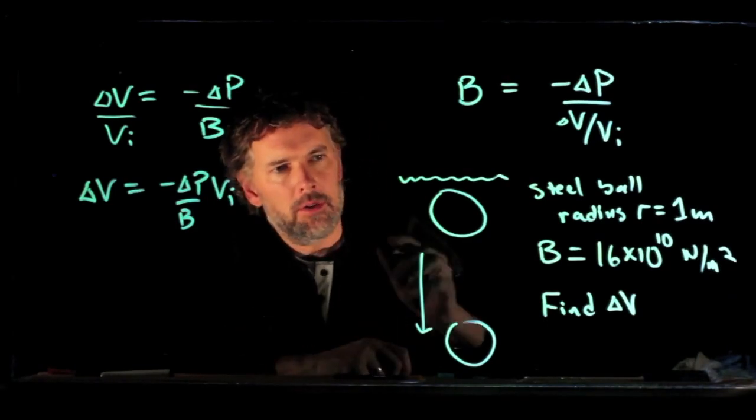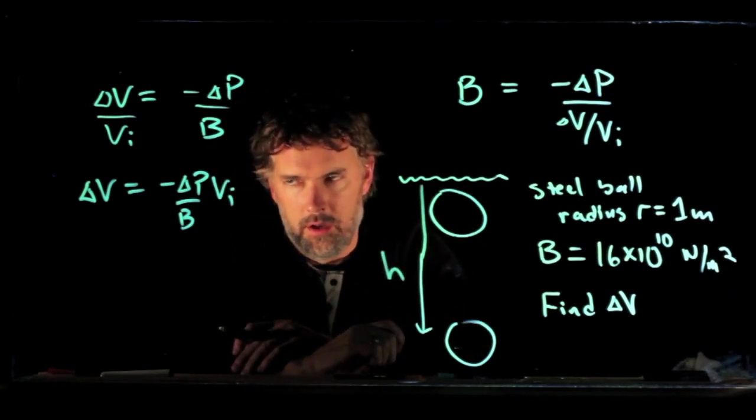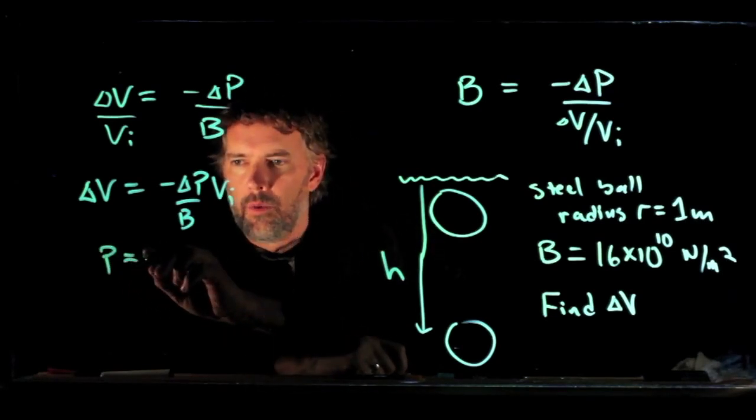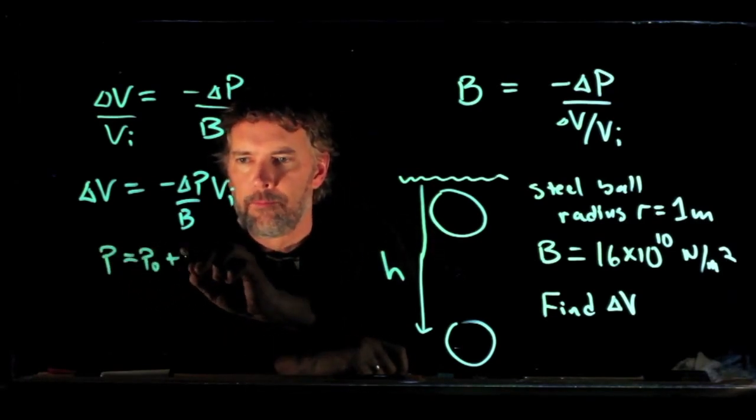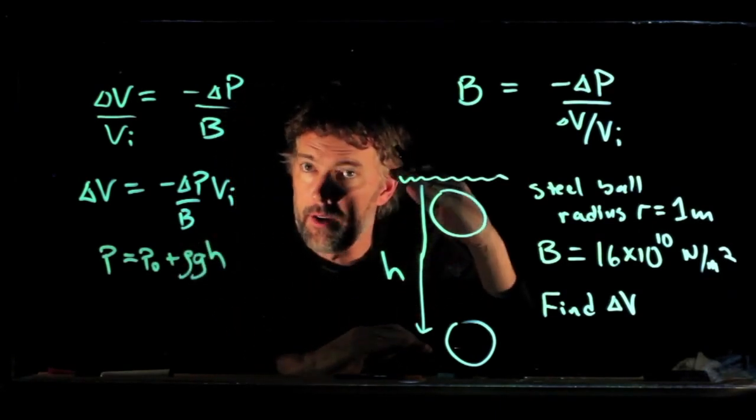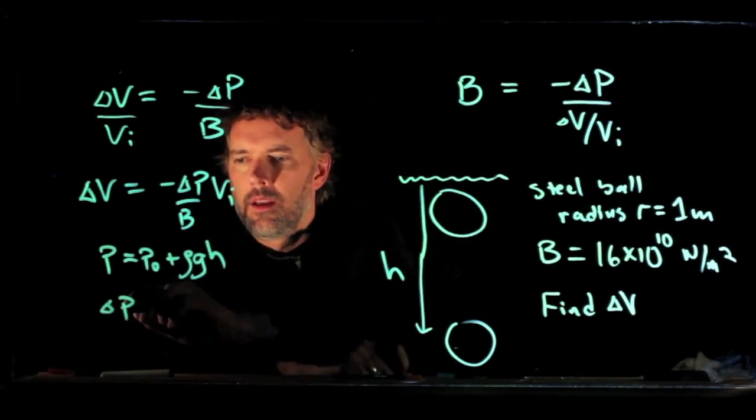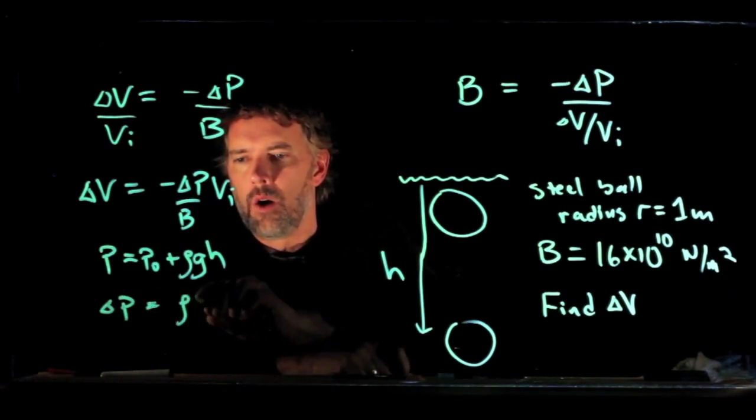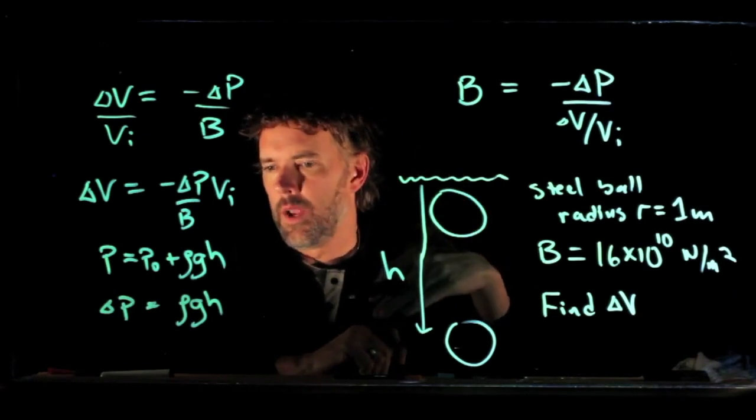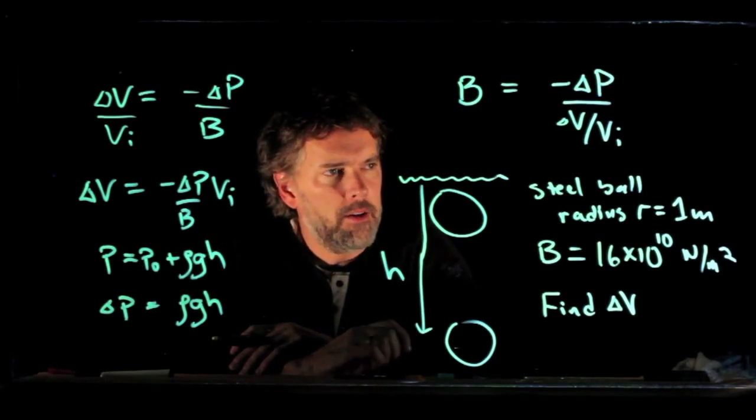Well if we go to a depth h below the surface of the ocean, then the pressure down there is equal to what it was at the surface plus ρgh. Yeah, it's just how much water is stacked up on top of you. So ΔP is just going to be ρgh. Right, we started at atmospheric pressure, we end up with an increase of ρgh.